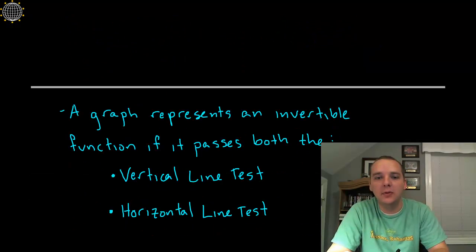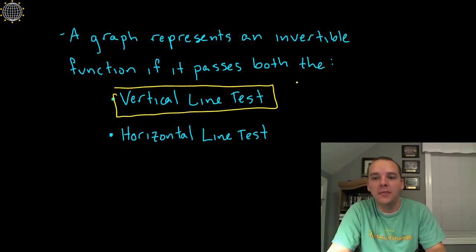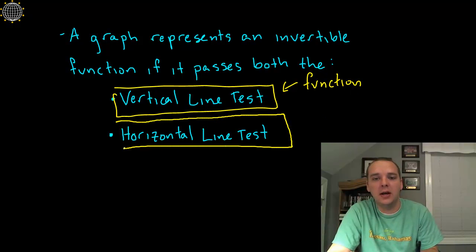So here we go, a graph represents an invertible function, a function that actually does have an inverse if it passes not only the vertical line test that we know very well, this makes sure that it's just a plain jane vanilla function, but also passes the horizontal line test.